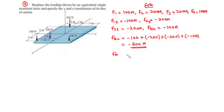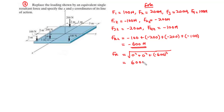The resultant force FR = √(0² + 0² + (-600)²) = 600 N, with no x or y components. The resultant force is 600 N acting vertically downwards.